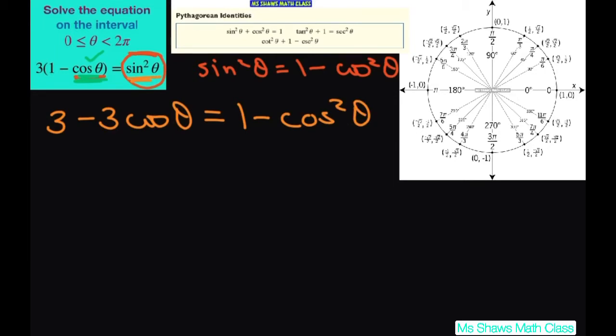Now let's move everything over to the left hand side of the equation. Add this cosine squared so you get cosine squared of theta. Then we have minus 3 cosine of theta. Subtract the 1 so you get plus 2 equals 0.